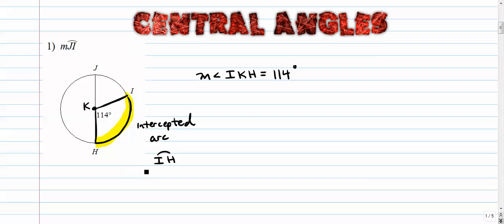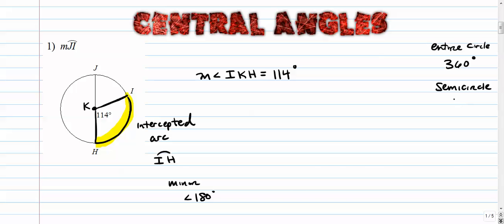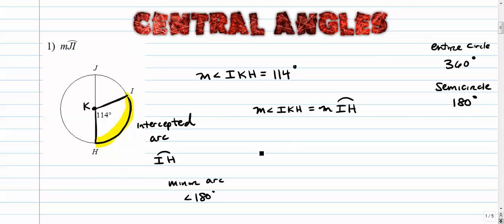Arc IH is a minor arc because its measure is less than 180. An entire circle has 360 degrees, and half of that is called a semicircle — an angle that has half of 360, or 180. So arc IH is a minor arc, meaning less than 180. Central angles have the same exact measure as their intercepted arc, so the measure of arc IH is also 114.